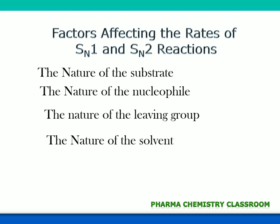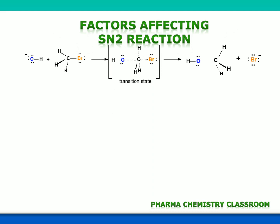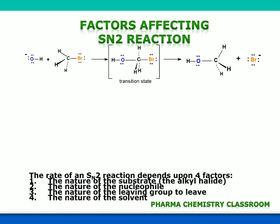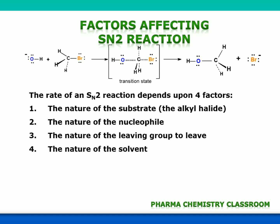Now we will see the factors affecting SN2 reaction. SN2 reaction is where mainly primary alkyl halides undergo substitution with the nucleophile. Here you can see methyl bromide reacting with OH⁻ to get a substituted product which is methyl alcohol. As mentioned, the nature of the substrate, nucleophile, leaving group, and solvent are the four factors affecting SN2 reaction.